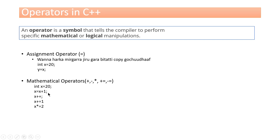So x is equal to x plus 1. The second step — the increment — will be x plus 1. x plus 1 is the increment operation.